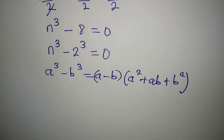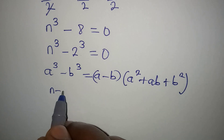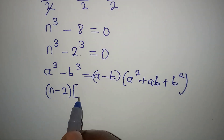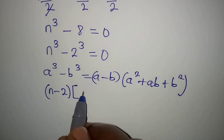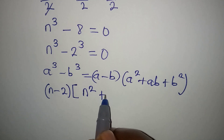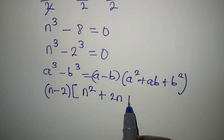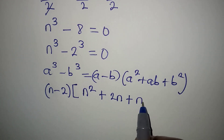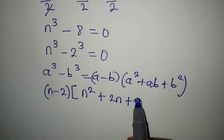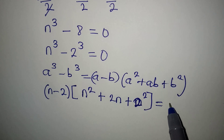From here now, our a is n and b is 2. So that means here we have n minus 2 in this bracket. Then in the second bracket, we have a squared which will be n squared, plus ab which will be 2 times n, then plus b squared — and b is 2 — so that means here we are having 2 squared. Close this bracket and equate this to 0.